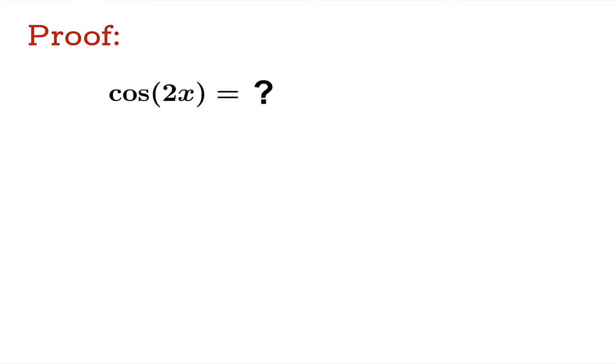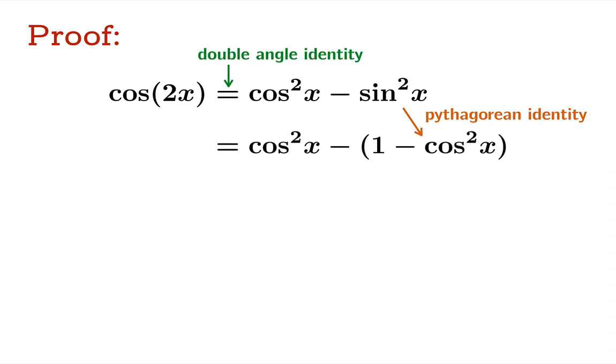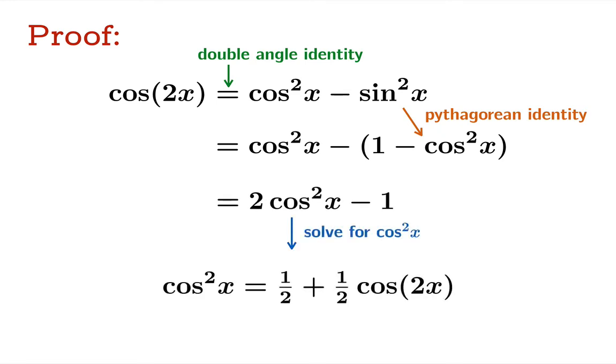We're going to start with the double angle identity for cosine. What is cosine of 2x equal to? It's equal to cos²(x) - sin²(x). Now we can replace sin²(x) with 1 - cos²(x), the Pythagorean identity. If you clean this up a little bit, you're going to get 2cos²(x) - 1. And now all you have to do is solve for cos²(x). And you're going to get this formula right here.